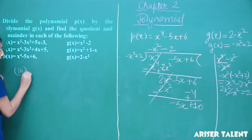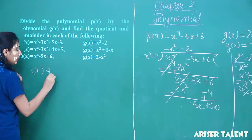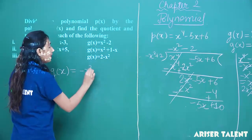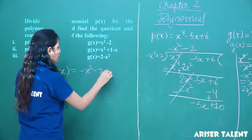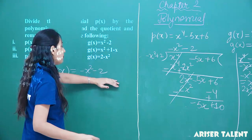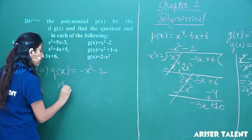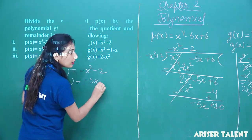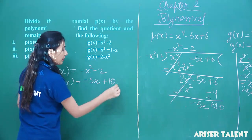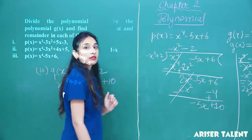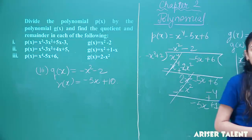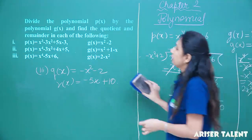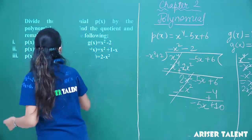In the third question, the quotient is minus x squared minus 2, and the remainder is minus 5x plus 10. Enough of this type of question — now let us change the type.